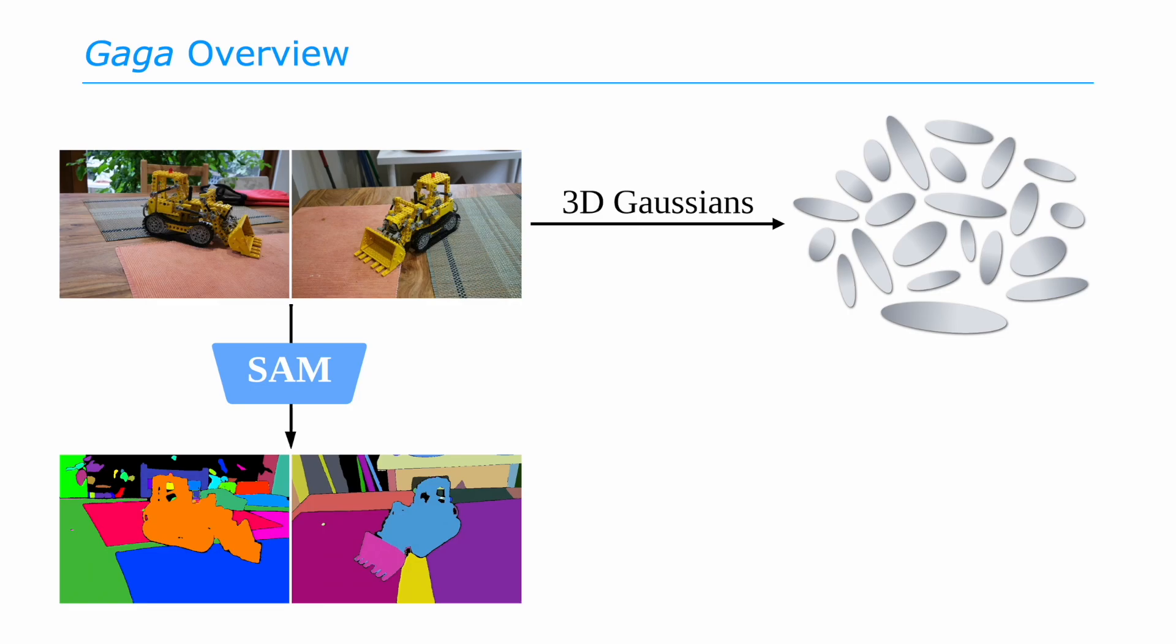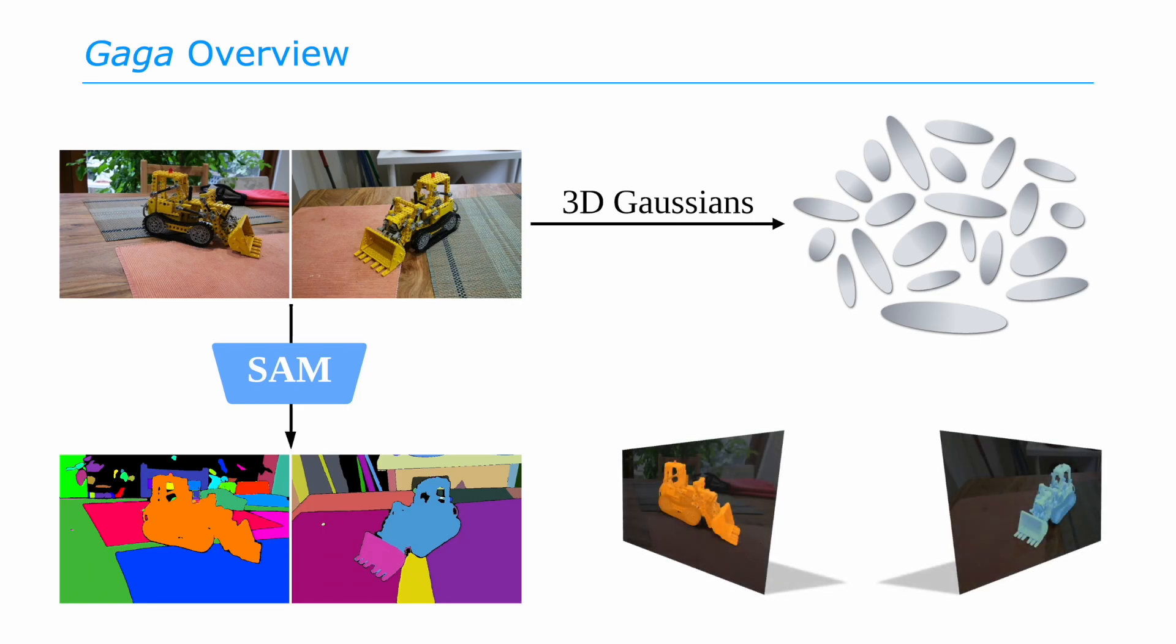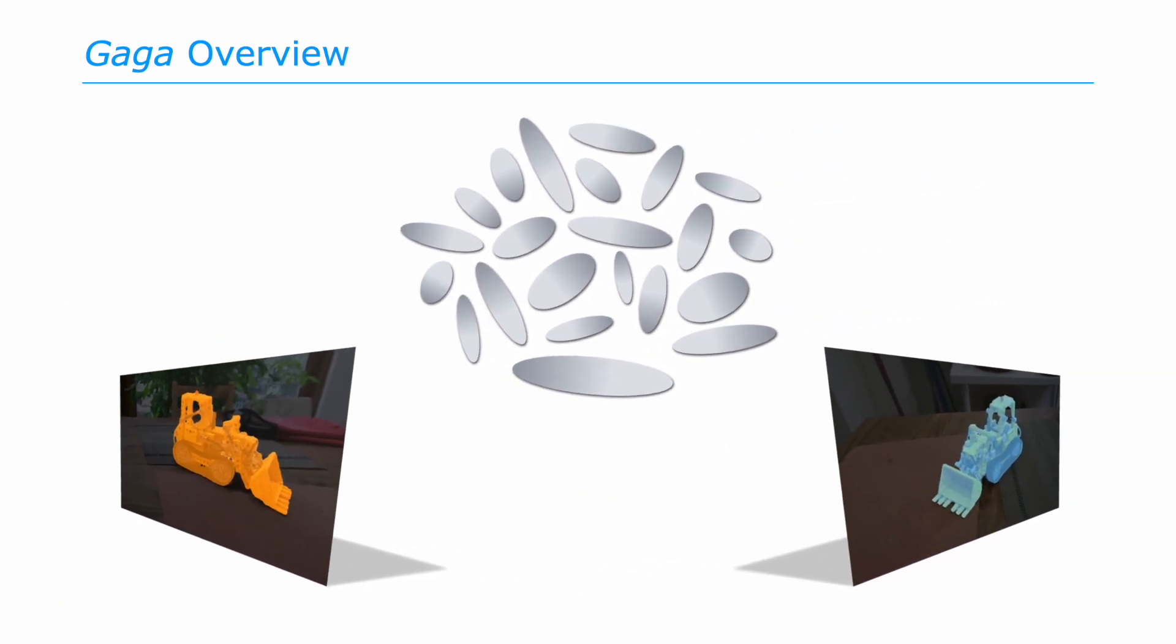To lift 2D segmentation masks to 3D, we design a 3D-Aware Mask Association strategy to assign each 3D object a multi-view consistent mask label. We take the mask of the bulldozer as an example to illustrate our mask association process.